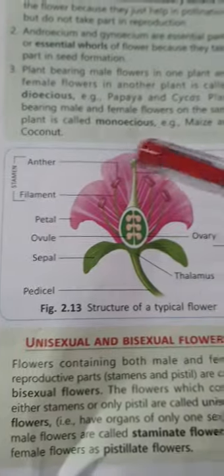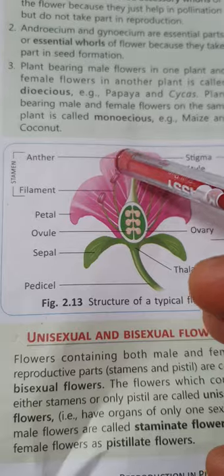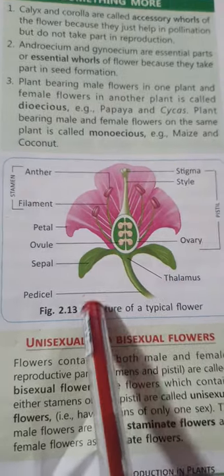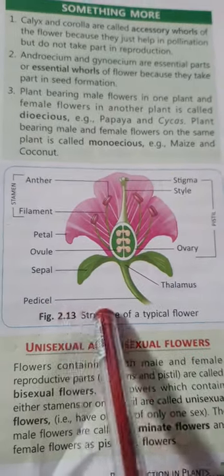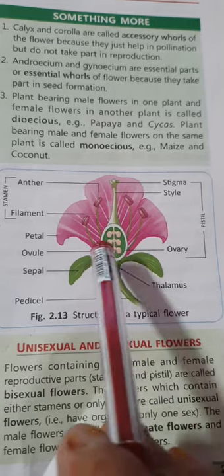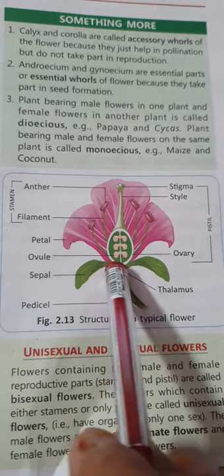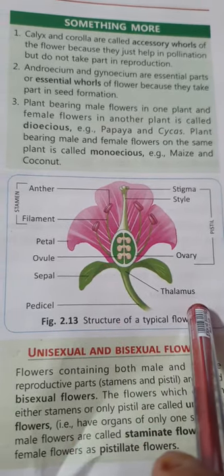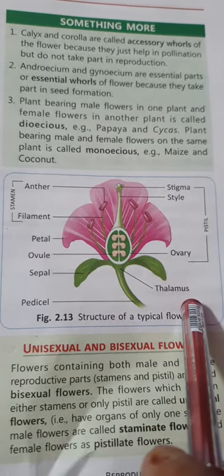In the picture we can see the anther, and the pedestal from where the flower is attached. The place where the flower is kept is the thalamus.